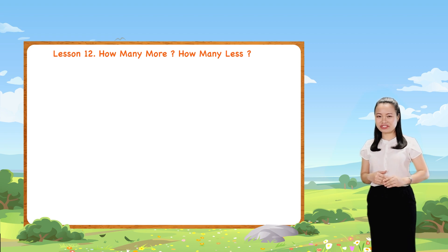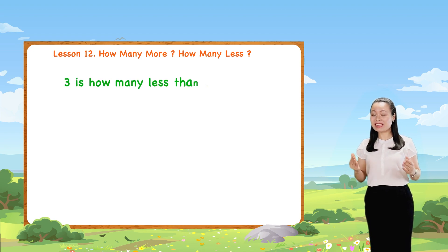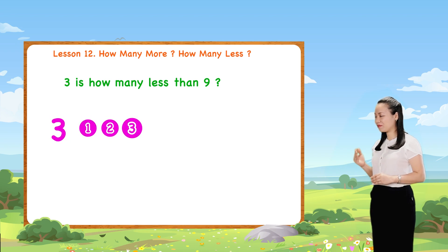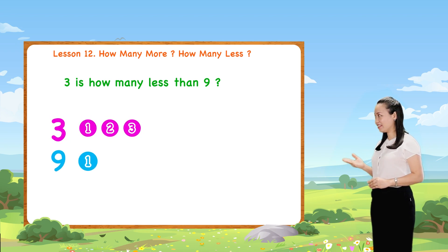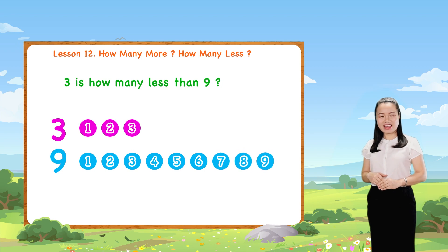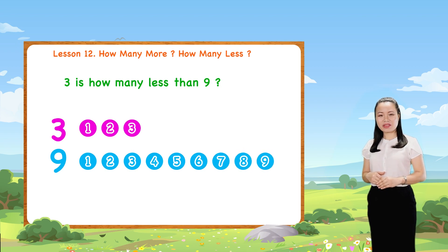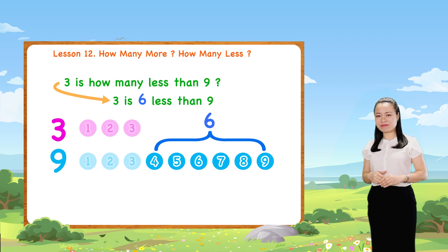Next question, three is how many less than nine? Here, we have three dots and nine dots. Then, you can see, three is six less than nine.